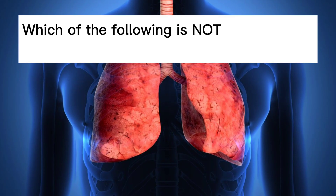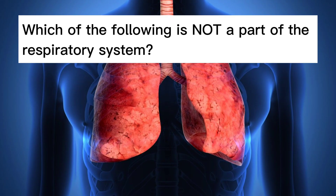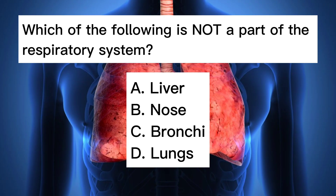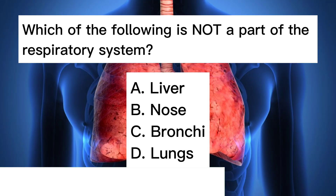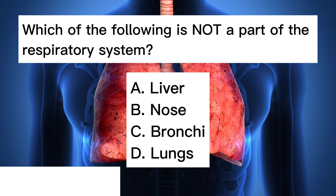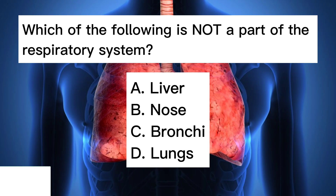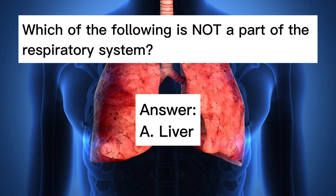Which of the following is not a part of the respiratory system? A. Liver. B. Nose. C. Bronchia. D. Lungs. Answer: A. Liver.